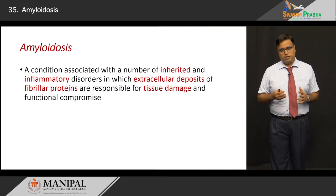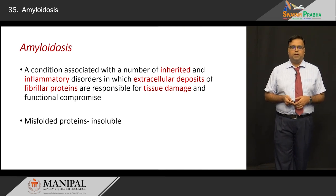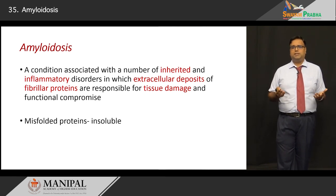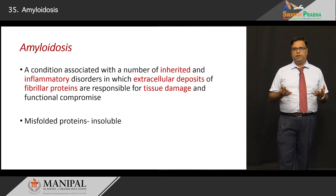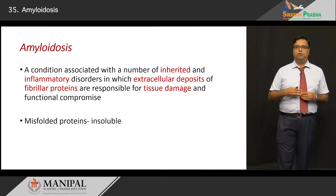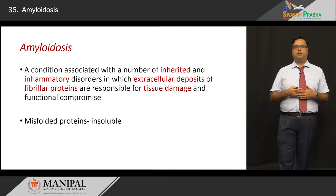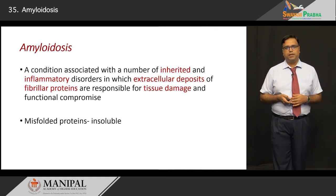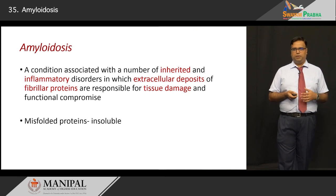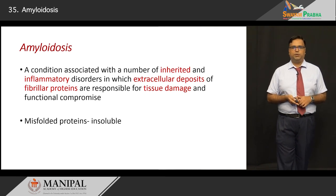Extracellular deposits of material in the tissue, in the stroma, result in damage of the principal tissue where they are deposited. Proteins which are synthesized normally can be produced in excess and have a tendency to aggregate, misfold, and deposit. Sometimes, because of inherited forms of the disease, misfolded proteins are synthesized, which polymerize and aggregate, resulting in formation of highly insoluble fibrils that deposit in tissue. This is amyloidosis — a very interesting topic.